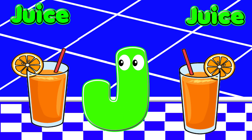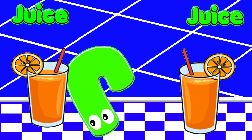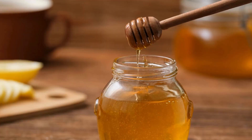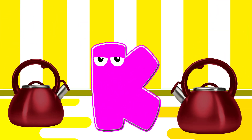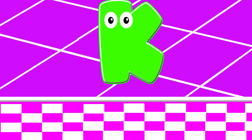J is for juice. J is for jar. J is for juice. K is for kettle. K is for kettle.